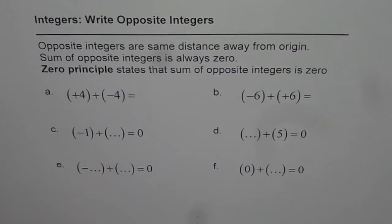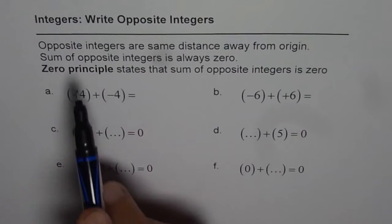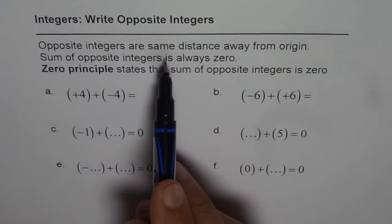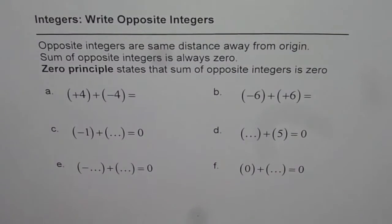Let us understand what are opposite integers. Opposite integers are same distance away from origin.